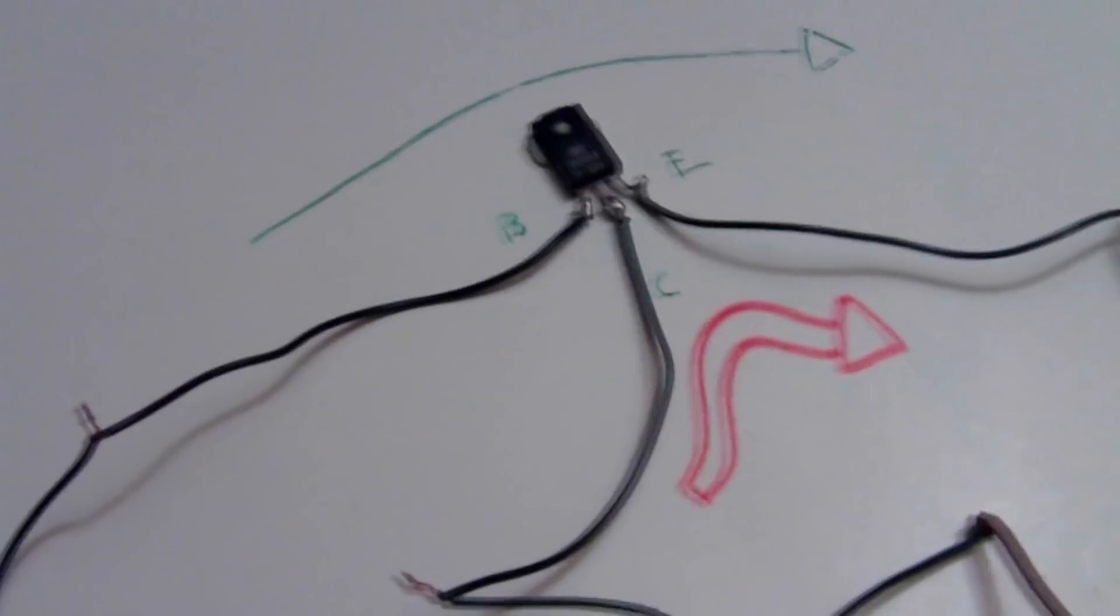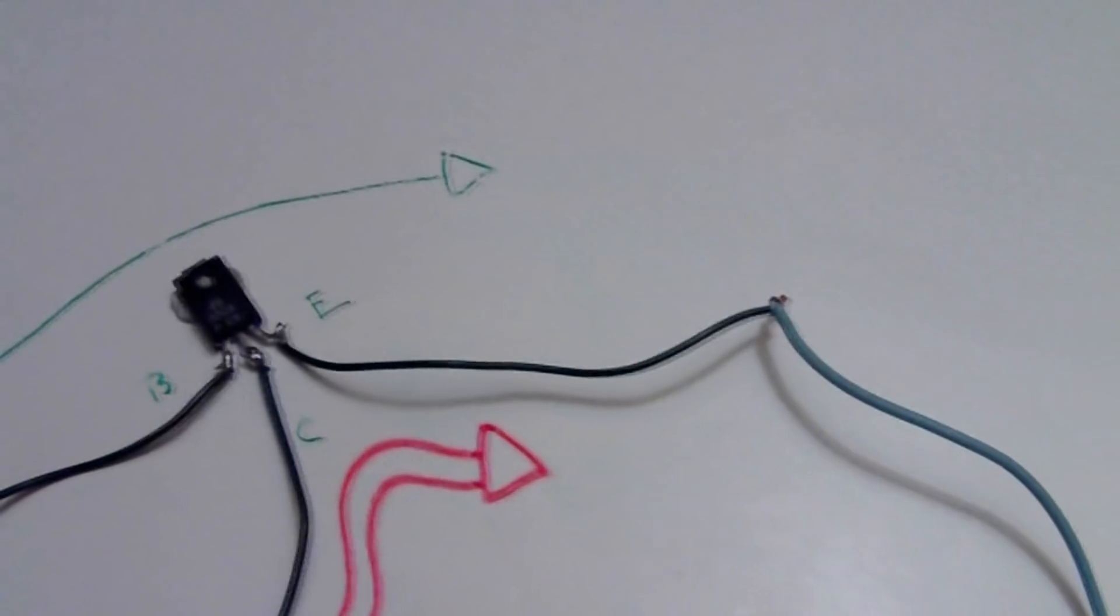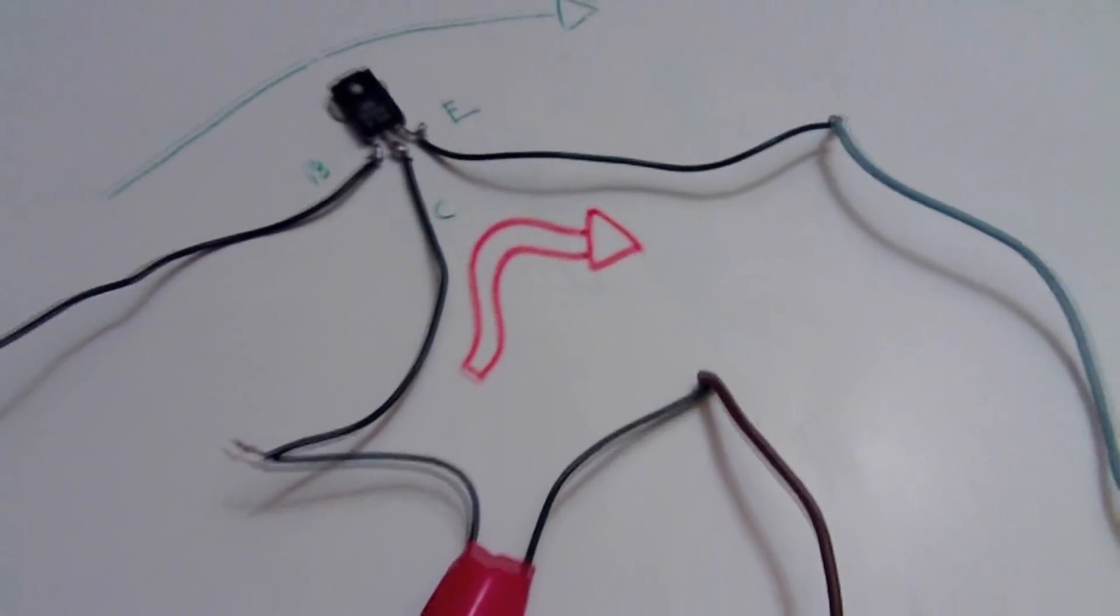For an ordinary bipolar transistor, when there is a small current between the base and the emitter, a much powerful current can flow between the collector and the emitter.